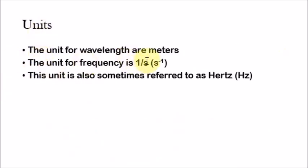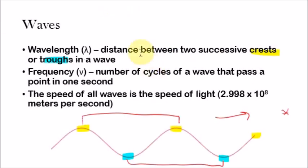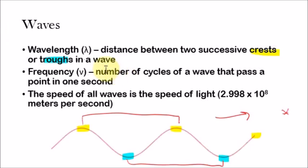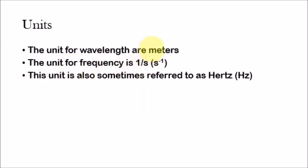The units for wavelength are meters, which makes sense because wavelength is just a distance, and in the metric system we measure distance in meters. The unit for frequency is 1 over s, because frequency is cycles per second. So 1 over s — simple.